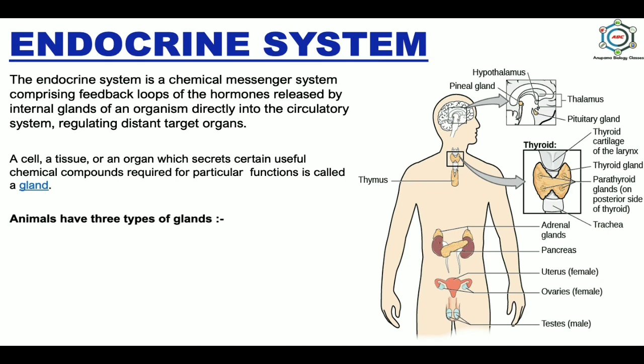In animals, there are three types of glands: exocrine glands, endocrine glands, and heterocrine glands. Exocrine glands are also known as duct glands — examples include sebaceous glands in the skin, gastric glands in the stomach, and the liver. Endocrine glands are also known as ductless glands; their secretions are called hormones — examples include the pituitary gland, thyroid gland, and thymus. Heterocrine glands consist of both exocrine and endocrine components, like the pancreas and gonads, and function like both exocrine and endocrine glands.